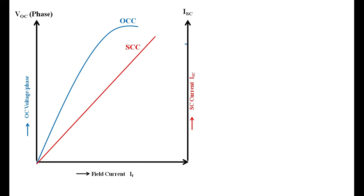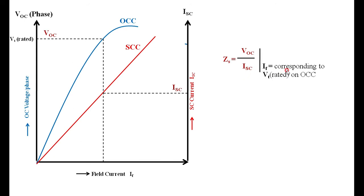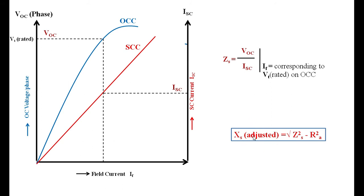To determine the synchronous impedance, corresponding to the rated voltage, mark the point on the OCC and find out what field current is required to generate that rated voltage under open circuit. For the same field current, note the short circuit current. Then, VOC divided by ISC for the same field current gives the synchronous impedance Zs. Then Ra is subtracted to find Xs, which is called Xs-saturated.